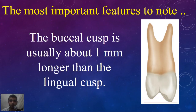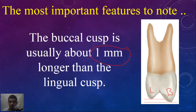Now we will shift to some of the most important features to note about the permanent maxillary first premolar. The first note is that the buccal cusp is usually about one millimeter longer than the lingual cusp. As you can see in this picture, the buccal cusp is longer by one millimeter than the lingual cusp, and this is one of the differences from the maxillary second premolar.